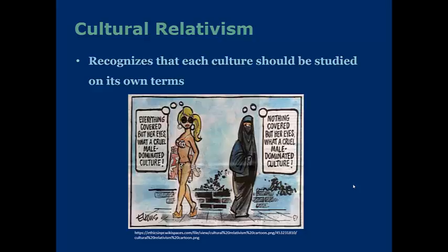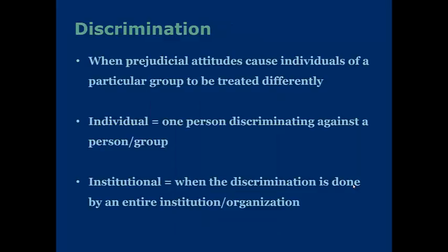It's important to recognize both of these cultures and take them within their own contexts when studying. Discrimination is when prejudicial attitudes cause individuals or groups to be treated differently. Individual discrimination is when one person discriminates against a person or a group. Where it leads to a bigger problem is institutional discrimination, which is when the discrimination is done by large groups and organizations, limiting certain groups in scope and mobility. That'll conclude our tenth lecture in the Behavioral Sciences module — we only have two more to go, so hang in there.